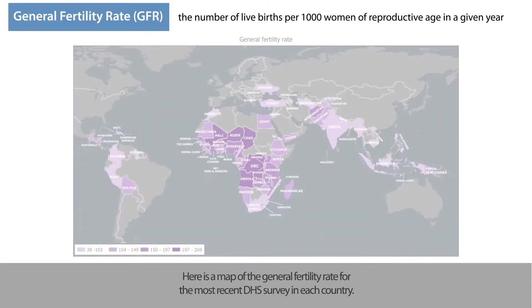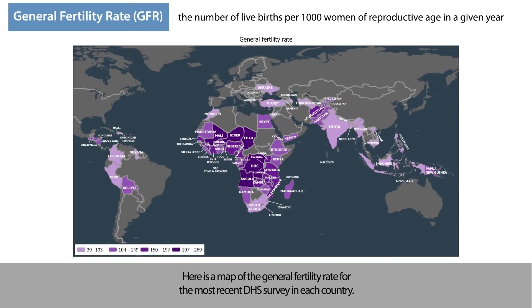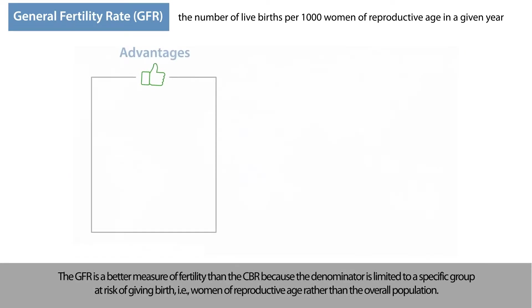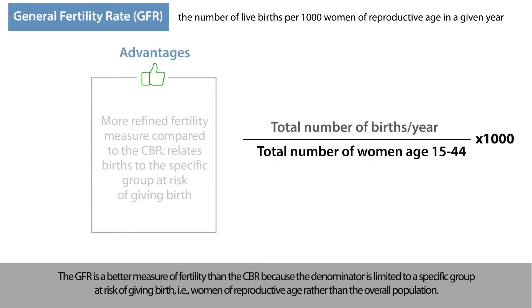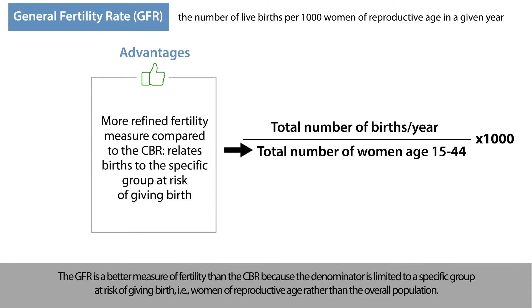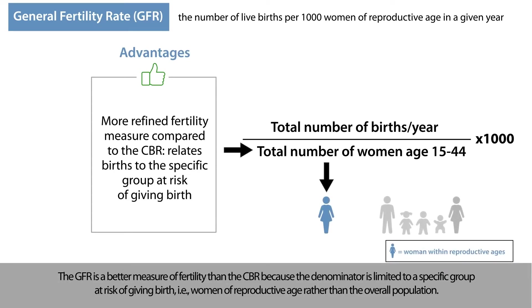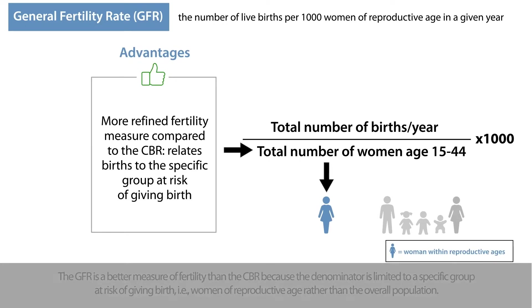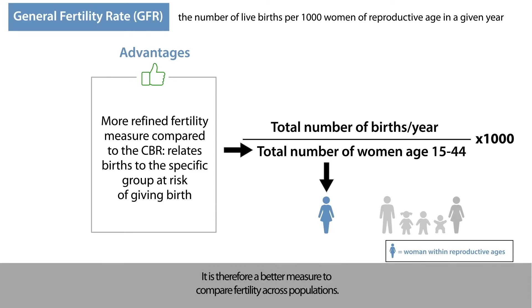Here is a map of the general fertility rate for the most recent DHS survey in each country. The GFR is a better measure of fertility than the CBR because the denominator is limited to a specific group at risk of giving birth — women of reproductive age rather than the overall population. It is therefore a better measure to compare fertility across populations.